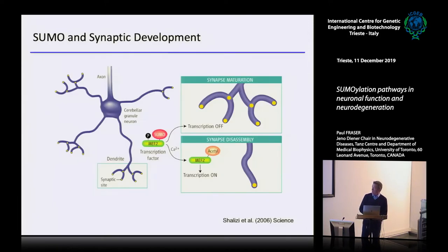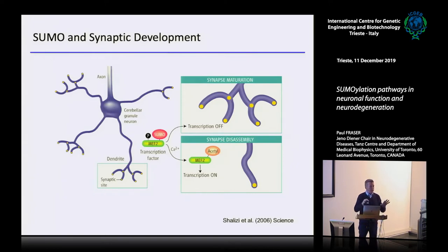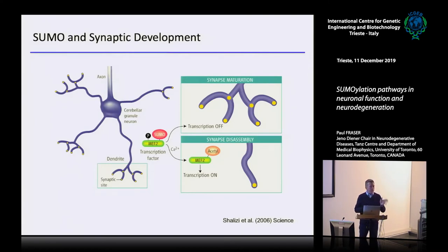We got interested in this with a paper from about 13 to 14 years ago, where a myocyte enhancing factor — a transcription factor — could be SUMOylated or phosphorylated, and there's a big connection between those two. Proteins that can get SUMOylated often have an interplay between phosphorylation and SUMOylation similar to ubiquitination. When this factor is SUMOylated or phosphorylated, transcription is off and you get a lot of dendritic arborization. When it's switched to an acetyl group, you shut down that process. So neurodevelopment can be very intimately controlled by SUMOylation of one protein.